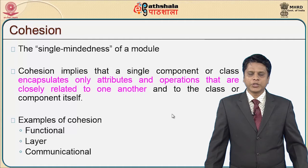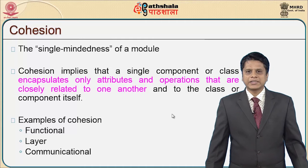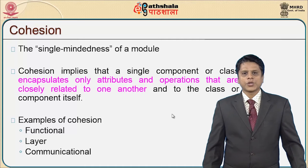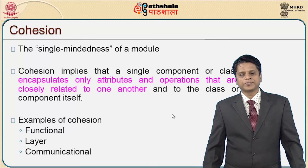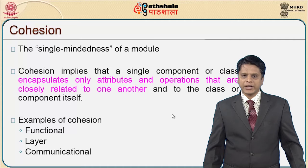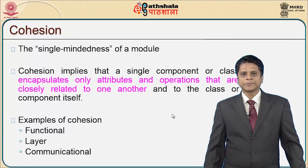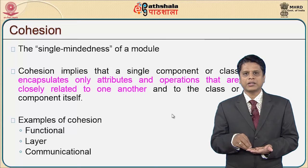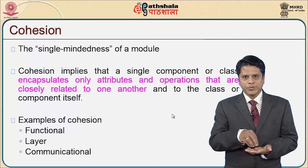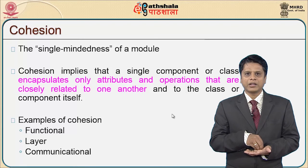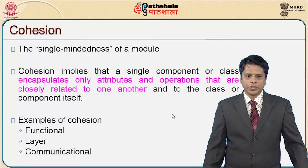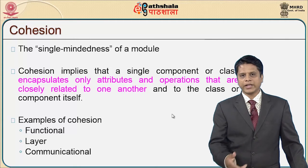Now it is time to take a closer look at how cohesion works along with its types. Cohesion is nothing but the single-mindedness of a module. It implies that a single component or class encapsulates only attributes and operations that are closely related to one another. Attributes that are very close to one another, if they have very good strength, become functionally more powerful for the class or component itself. Types of cohesion include functional cohesion, layered cohesion, and communicational cohesion.